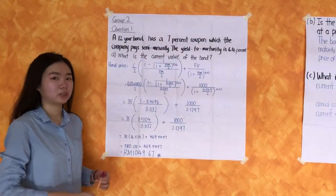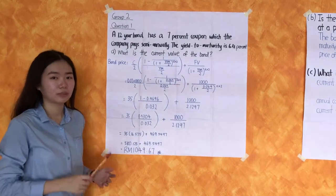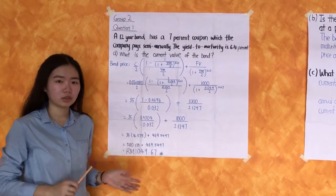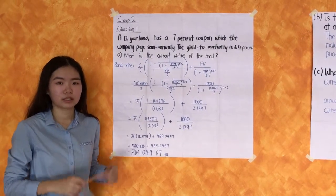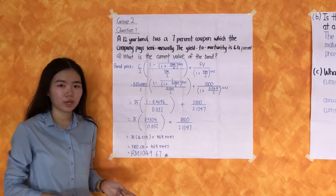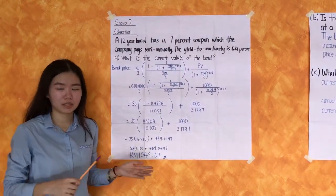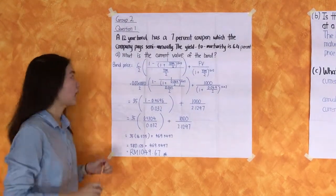Group 2 question 1 asks: A 12-year bond has a 7% coupon which the company pays semi-annually. The yield to maturity is 6.4%. So we conclude that the time of the bond is 12 years, the coupon rate is 7%, and the yield to maturity YTM is 6.4%. Question 1A asks: